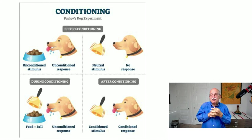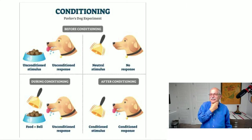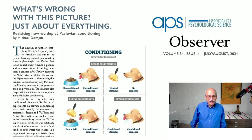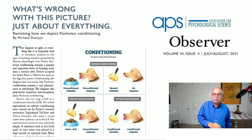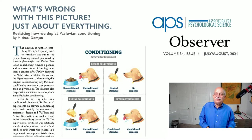As I mentioned, this diagram is used ubiquitously to introduce students to Pavlovian conditioning. Looking at it more closely, it turns out there are a lot of problems with it. The next slide shows an article I decided to write asking the question: what's wrong with this picture? The answer is just about everything. I was pleased that The Observer, a publication of the Association for Psychological Science, published this article in their July/August 2021 issue.